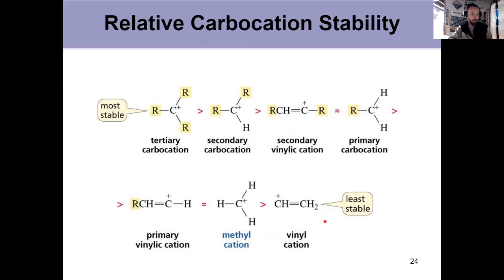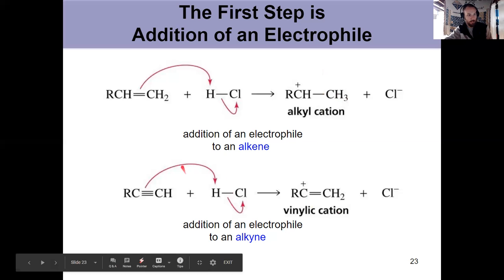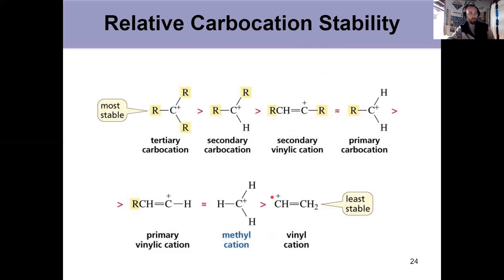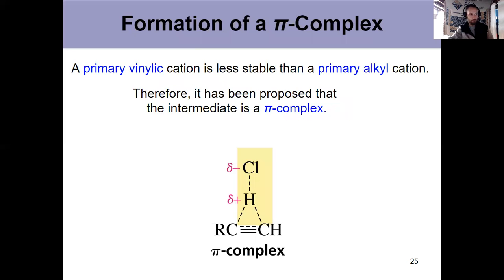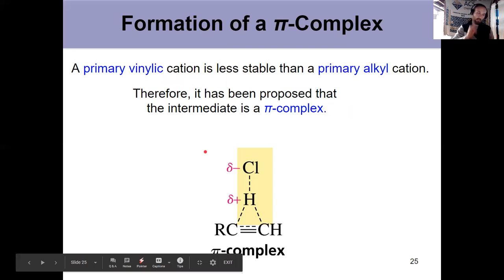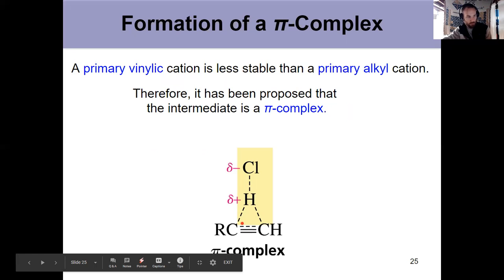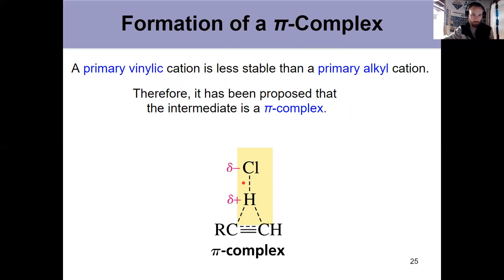When I take alkynes and expose them to an electrophile, they go through what's called a pi complex. Because I don't want to form that vinylic cation, it's too unstable. So I formed something not too unlike the cyclic bromonium or chloronium from chapter six - a partially broken pi bond here, partially formed sigma bonds to hydrogen, partially broken hydrogen chlorine bond.